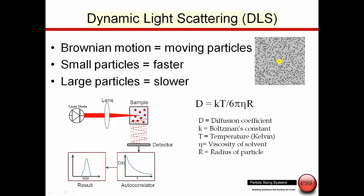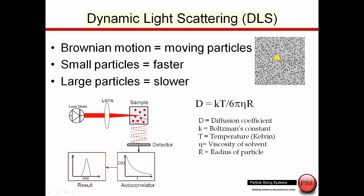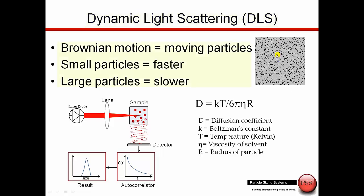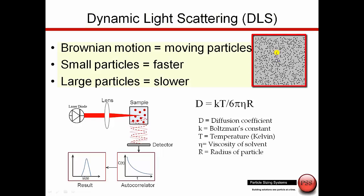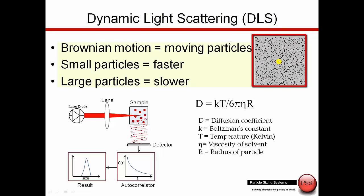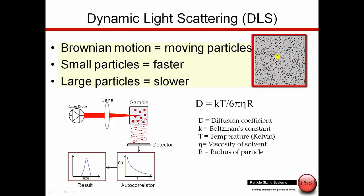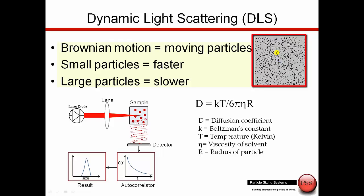Dynamic light scattering works by using light scattering to pick up on the signature from Brownian motion. Here we see a particle — the yellow particle — in a suspension of water. These are actually the water molecules moving, and the water molecules bang against the particle, creating this random thermal motion.